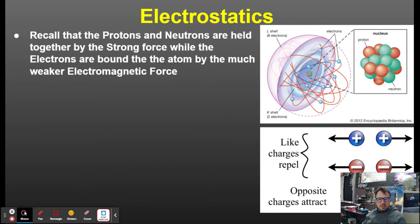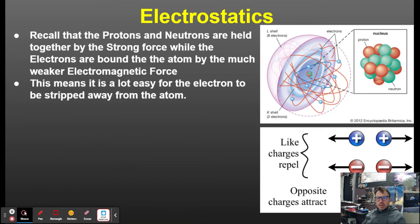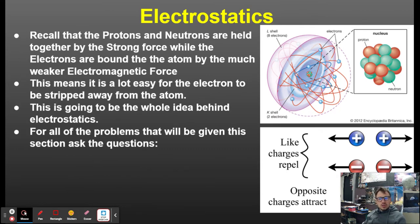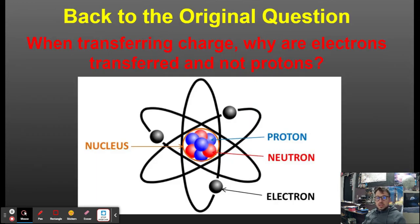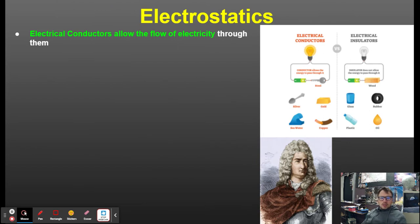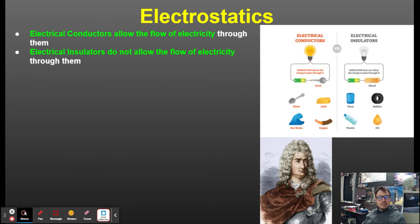This brings us to electrostatics. Protons and neutrons are held together by the strong force, while electrons are bound to the atom by the much weaker electromagnetic force — meaning it's a lot easier for electrons to be stripped away. For any electrostatics problem, ask: what do like charges do to each other? What do opposite charges do? And what will the electrons do? Like charges repel, opposite charges attract. Electrical conductors allow the flow of electricity; electrical insulators do not.